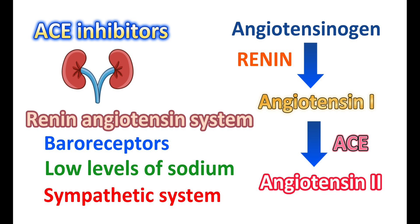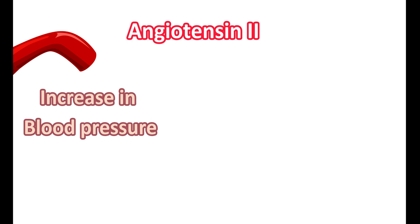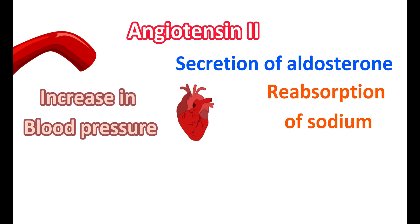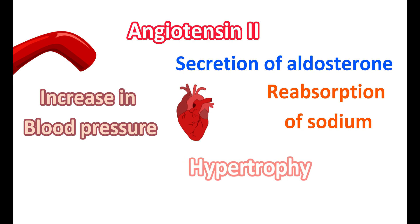Angiotensin-2 has several roles in the body. Its primary action on blood vessels is to activate angiotensin-2 receptors, leading to increased sodium entry, causing contraction of blood vessels and an increase in blood pressure. Angiotensin-2 also acts on the heart, modulating cardiac signaling and increasing cardiac proliferation. Additionally, it stimulates secretion of aldosterone, a hormone responsible for reabsorption of sodium at the renal tubules, thereby elevating sodium levels and helping restore blood pressure. Angiotensin-2 also causes hypertrophy — proliferation of muscles resulting in increased thickness and loss of function — affecting vascular smooth muscle and cardiac muscle.